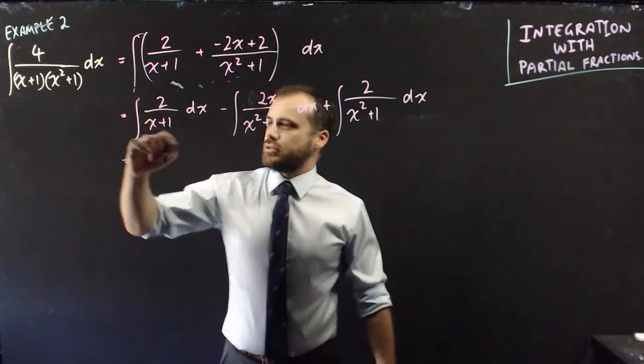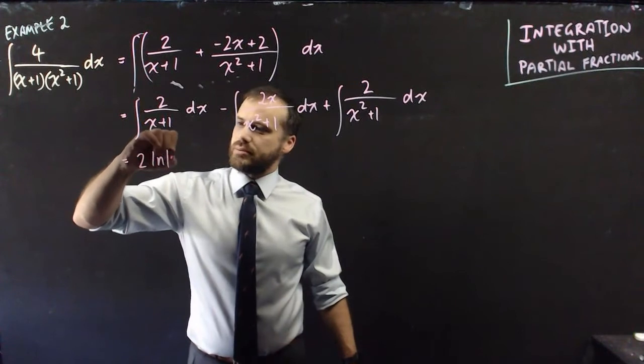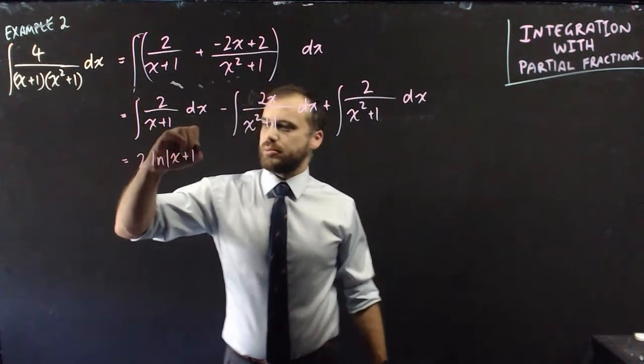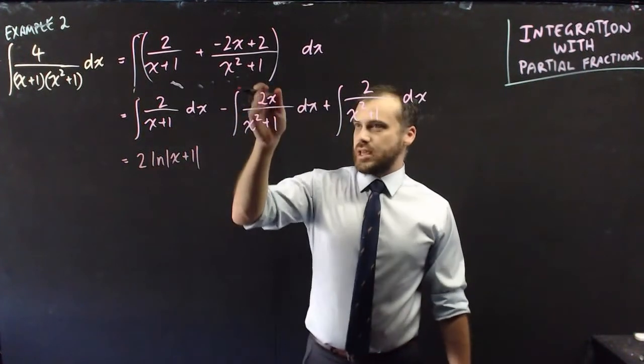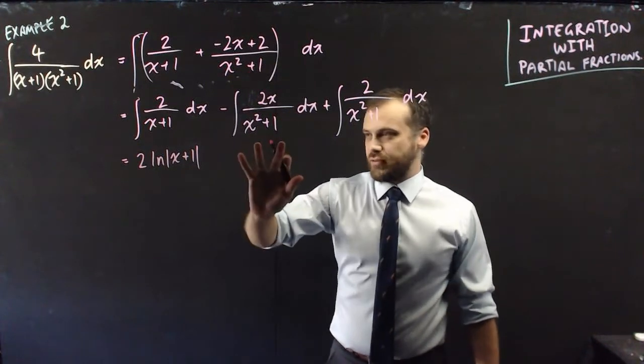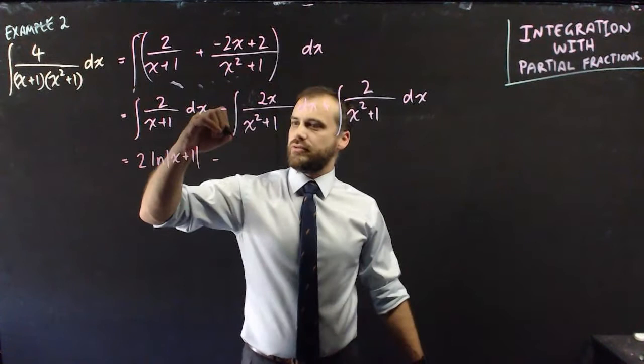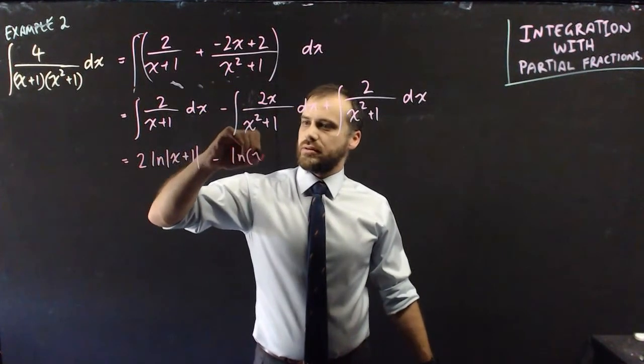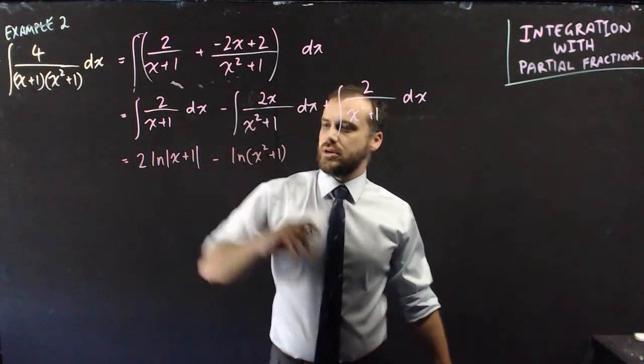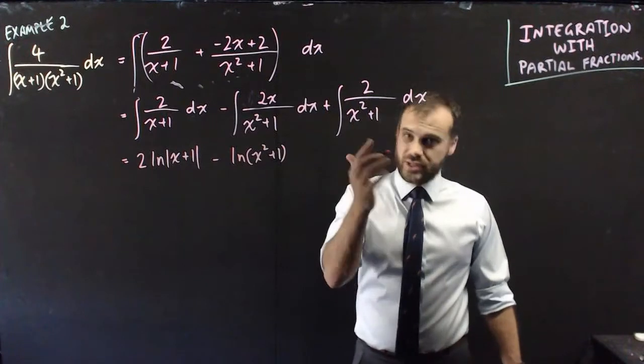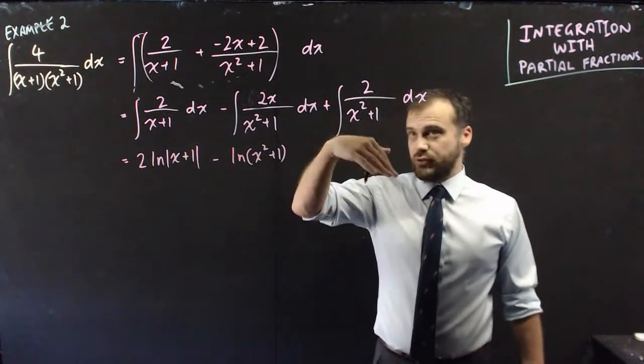So what do we have? The integral of this is 2 ln absolute value of x plus 1. Now this is f dash of x over f of x, so that's going to give us negative ln x squared plus 1. And then finally we have this one here. This is actually an inverse tan.